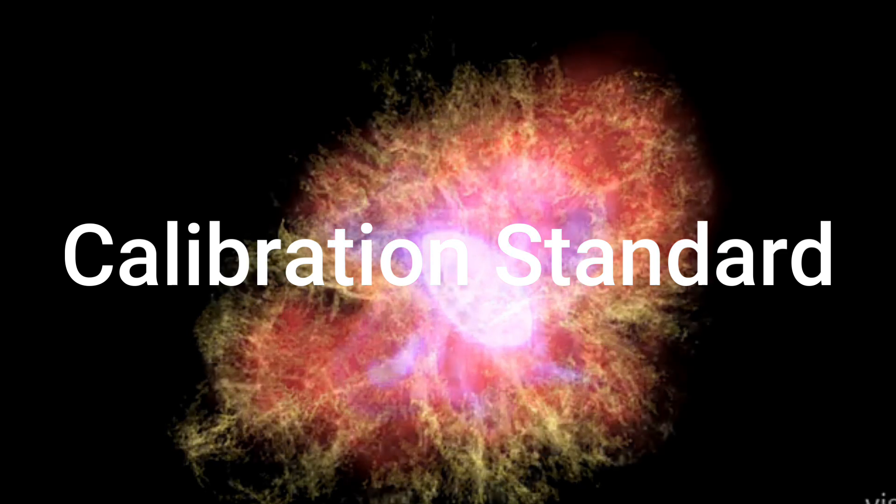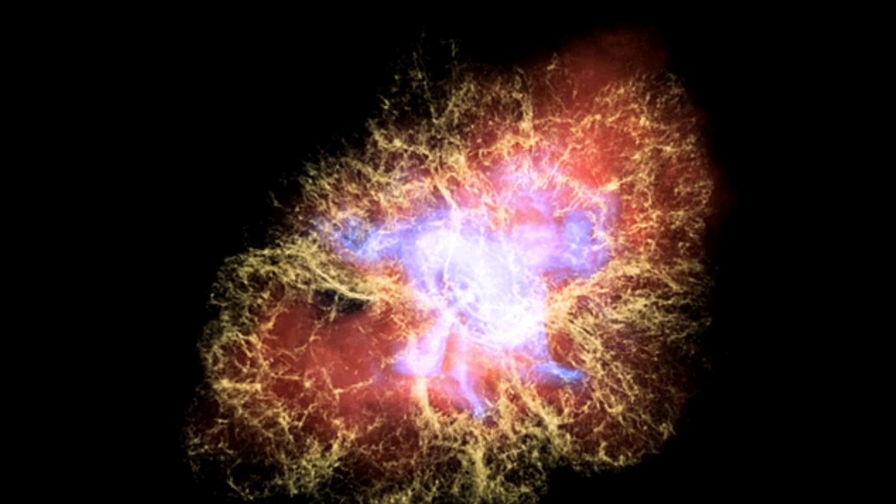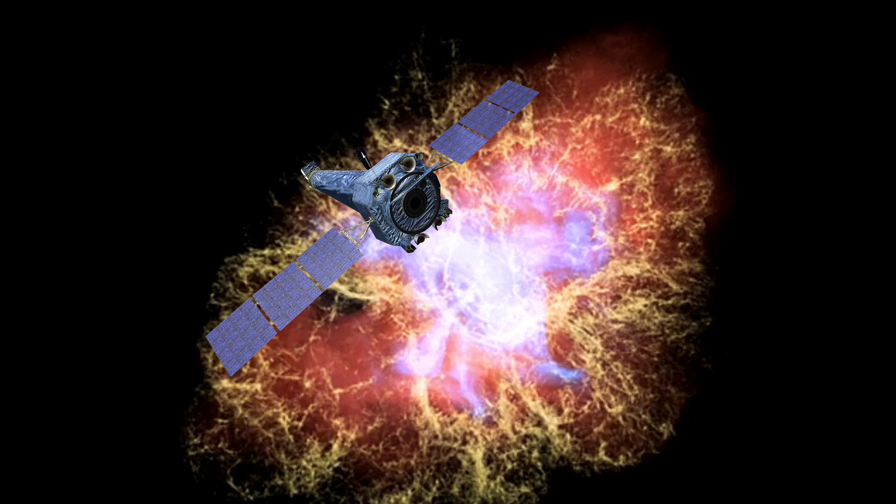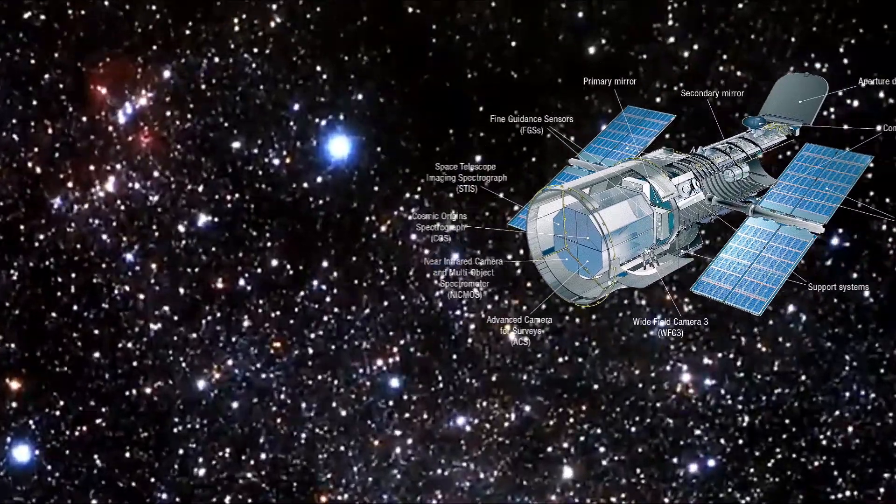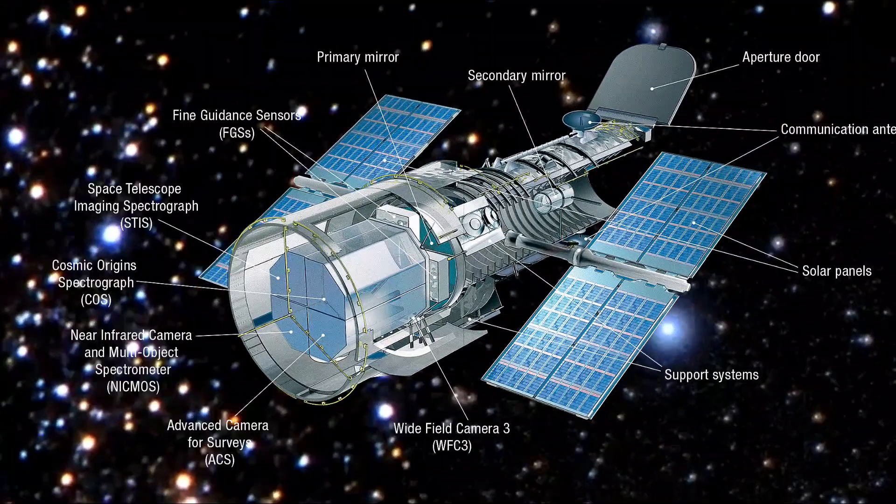The Crab Nebula's brightness and relatively stable emission make it a standard calibration source for X-ray and gamma-ray telescopes. Instruments like the Chandra X-ray Observatory and the Hubble Space Telescope frequently observe the nebula to ensure their measurements are accurate.